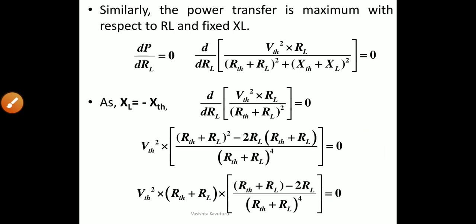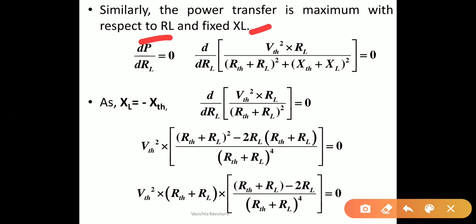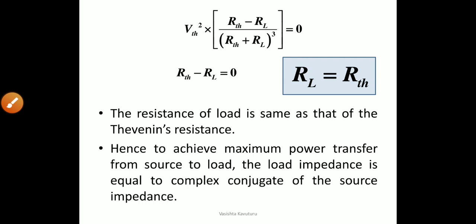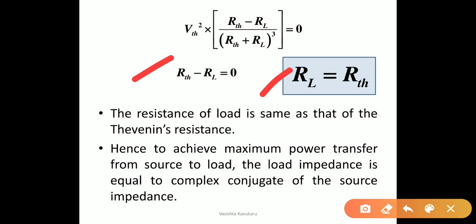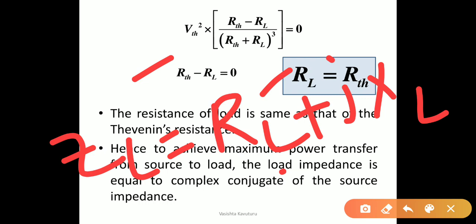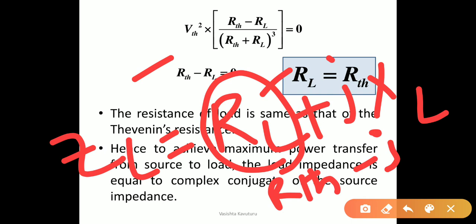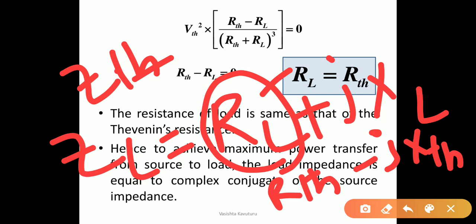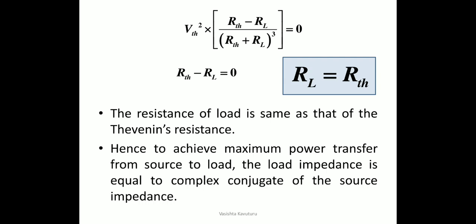Similarly, to find the resistive part, we vary the resistance of load and fix XL, setting dP/dRL = 0. After applying the condition XL = −XTH and simplifying, we get RL = RTH — the load resistance equals the source resistance. Combining the resistive and reactive parts: ZL = RL + jXL = RTH + j(−XTH) = ZTH*. Therefore, load impedance is equal to the complex conjugate of the source impedance.